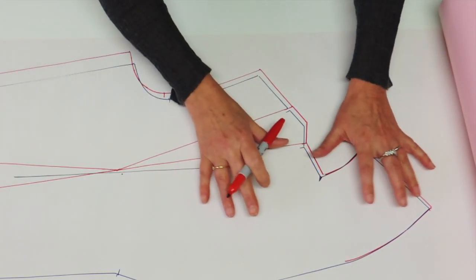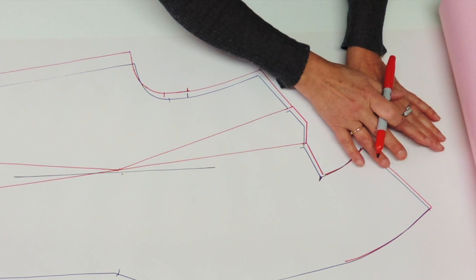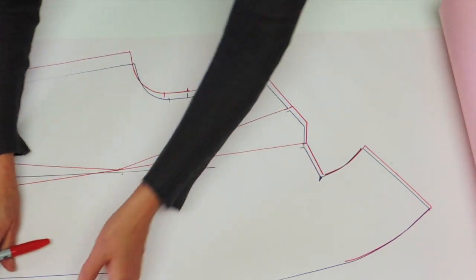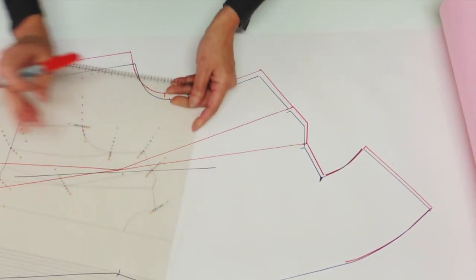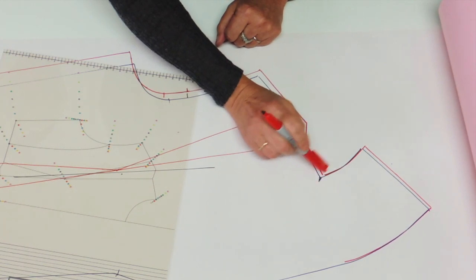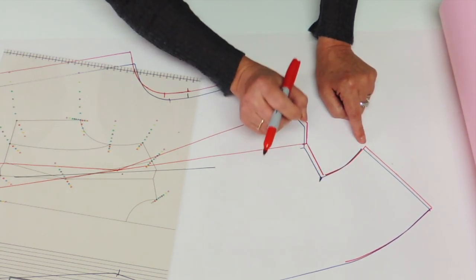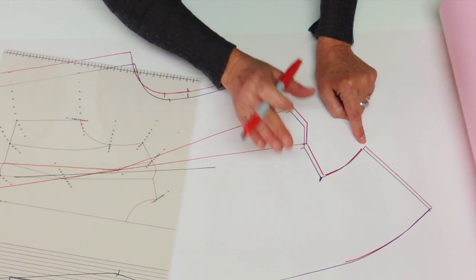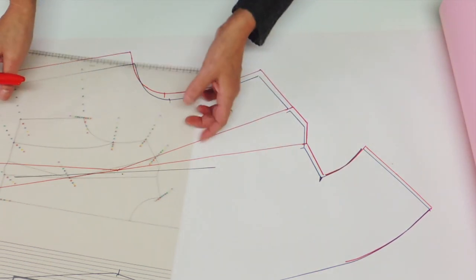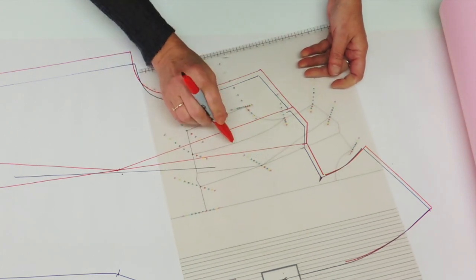So right now, we did grade the front but the back didn't get anything. So usually, because of the movement of the neck, the neck area grades about 3mm or 1.8 per size.